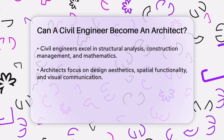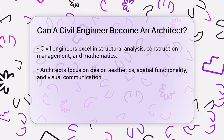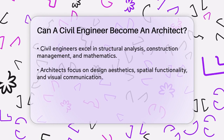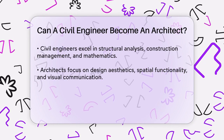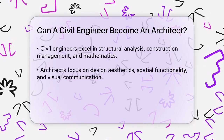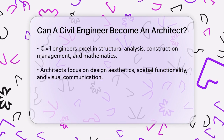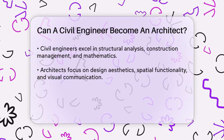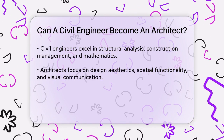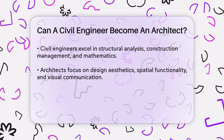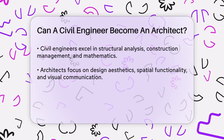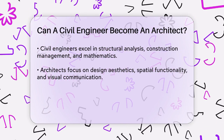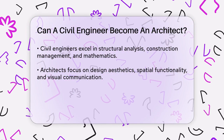The work environment and responsibilities also differ. Civil engineers are involved in the project from the conceptual phase to the completion of construction, ensuring the structural soundness and safety of the building. Architects are primarily engaged in the early stages of the project, focusing on the design, layout, and overall appearance of the building.